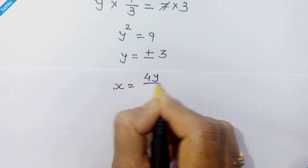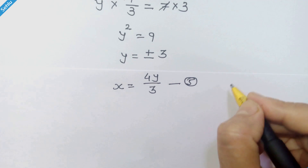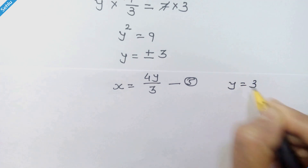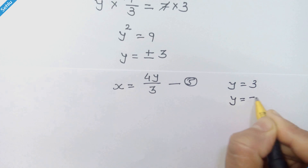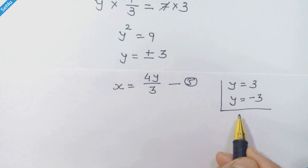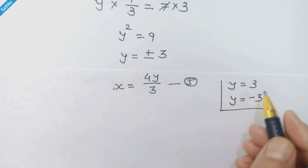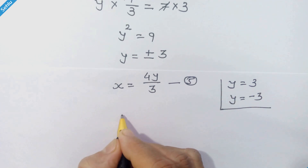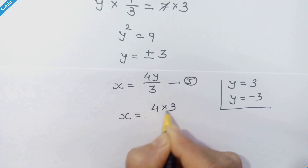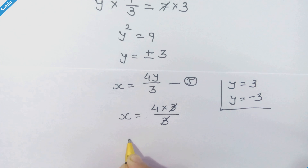So y is equal to plus or minus 3. Recalling equation 5, x is equal to 4y upon 3. We have y equal to 3 and y equal to minus 3. We will plug in these values one by one. Using y equal to 3, we have x equal to 4 times 3 upon 3 — the 3s cancel out — so x is equal to 4.